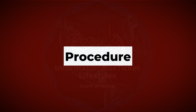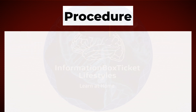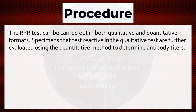Procedure of Rapid Plasma Reagin Test. The Rapid Plasma Reagin Test can be carried out in both qualitative and quantitative formats. Specimens that test reactive in the qualitative test are further evaluated using the quantitative method to determine antibody titers.